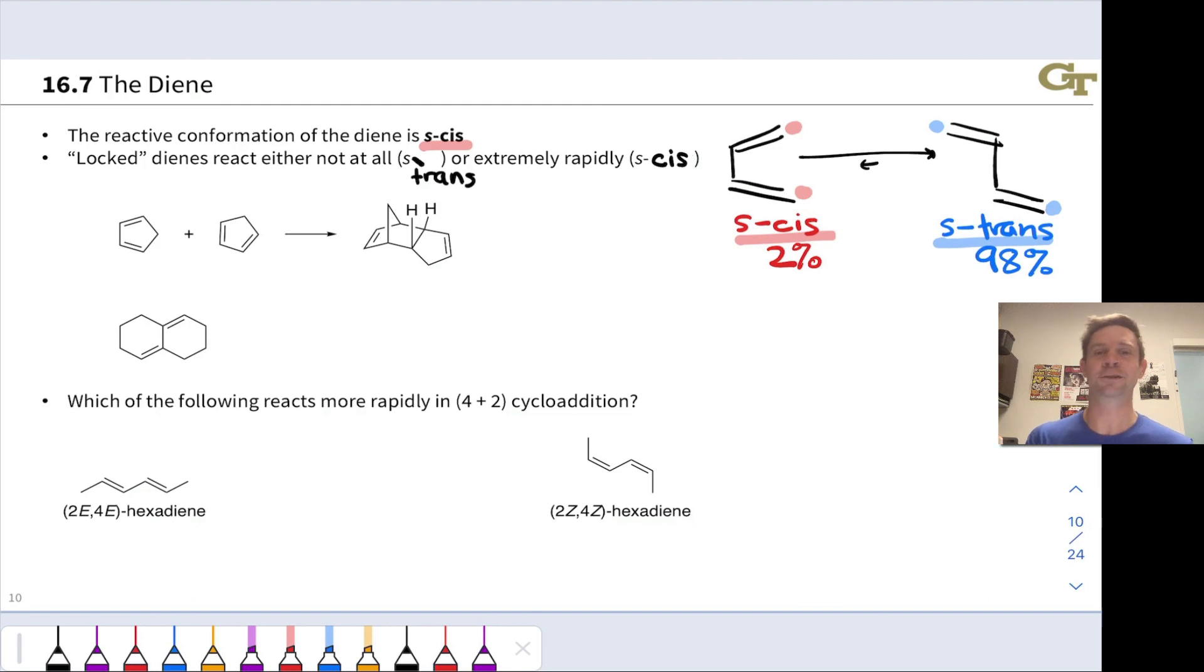So this gives us a sense of why we often need to heat these reactions, or give them kind of a kick in the pants. We need to increase the population of the S-cis conformation in order to get this reaction to go, in order to get the diene in the right conformation for reaction.